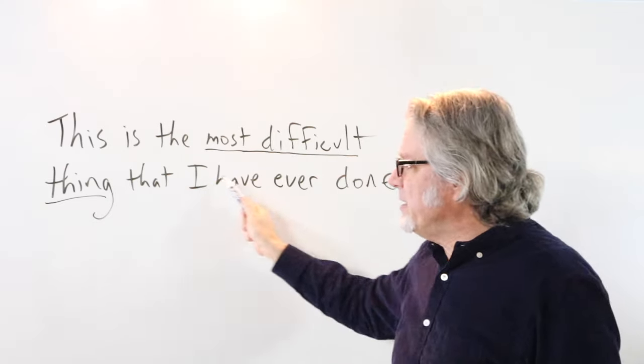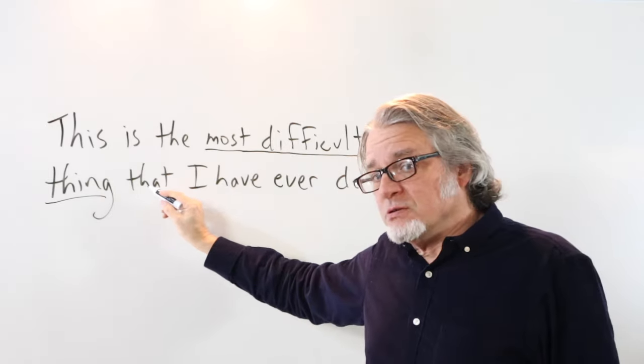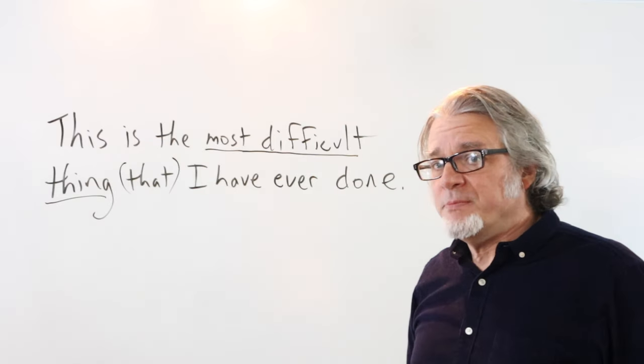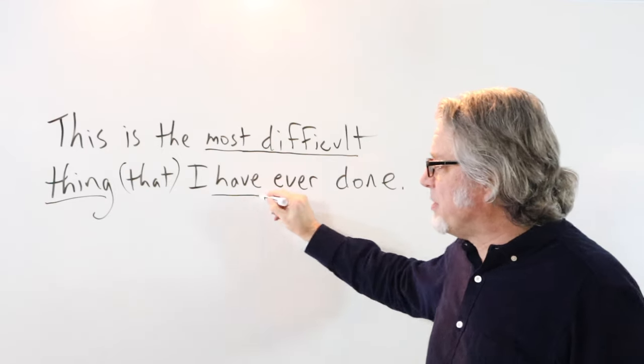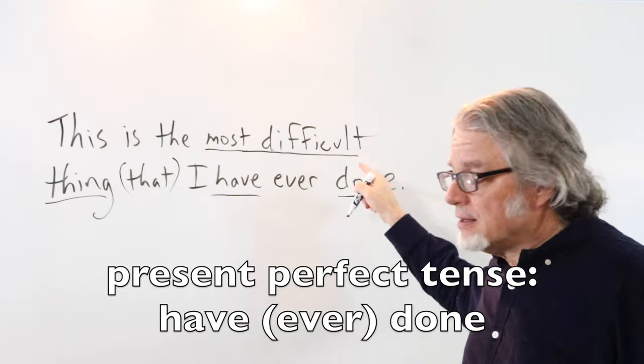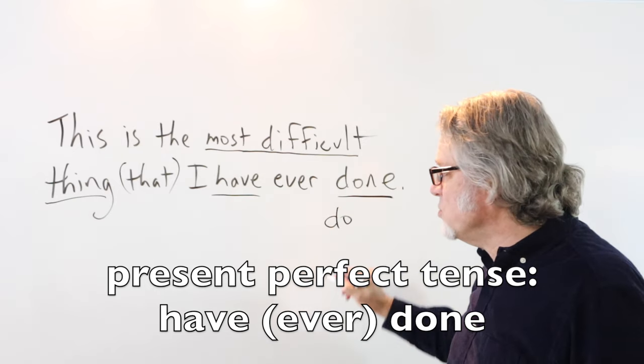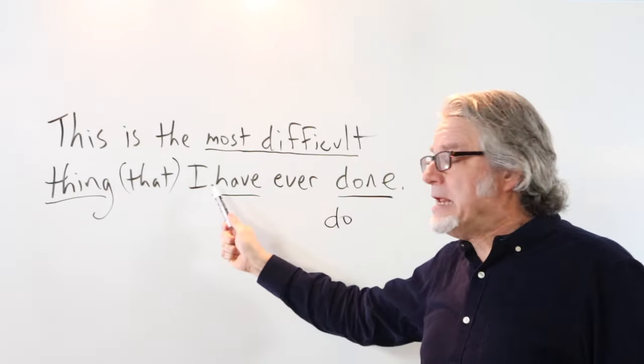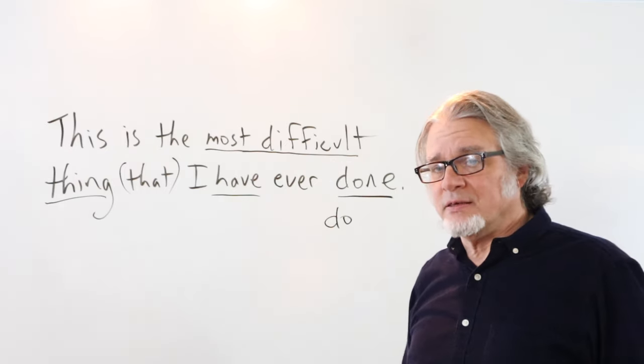The word that introduces this clause. This is optional. You don't have to use that, but many people do include it. And then here is the present perfect tense. This is the past participle for the verb do. It's very common to hear someone use the verb do in a sentence like this.